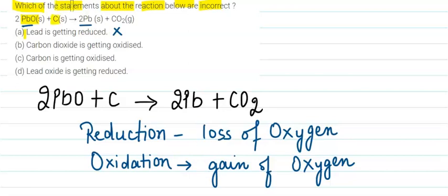The second statement says that carbon dioxide is getting oxidized. We can see that it is carbon that is getting oxidized, not carbon dioxide, so this statement is also incorrect. The third statement says that carbon is getting oxidized. We can see carbon on the reactant side, and there is an addition of oxygen, so this is a correct statement.